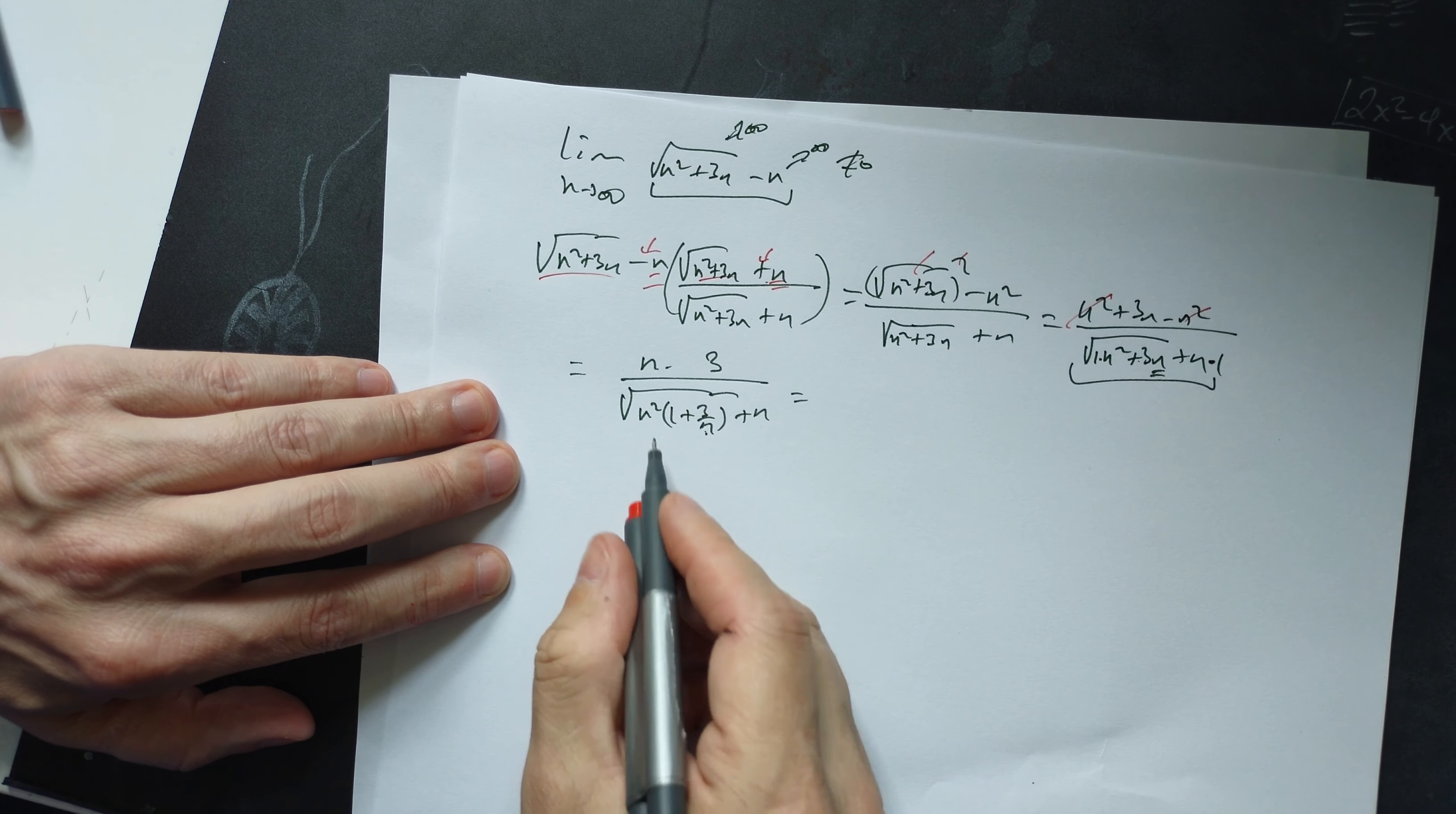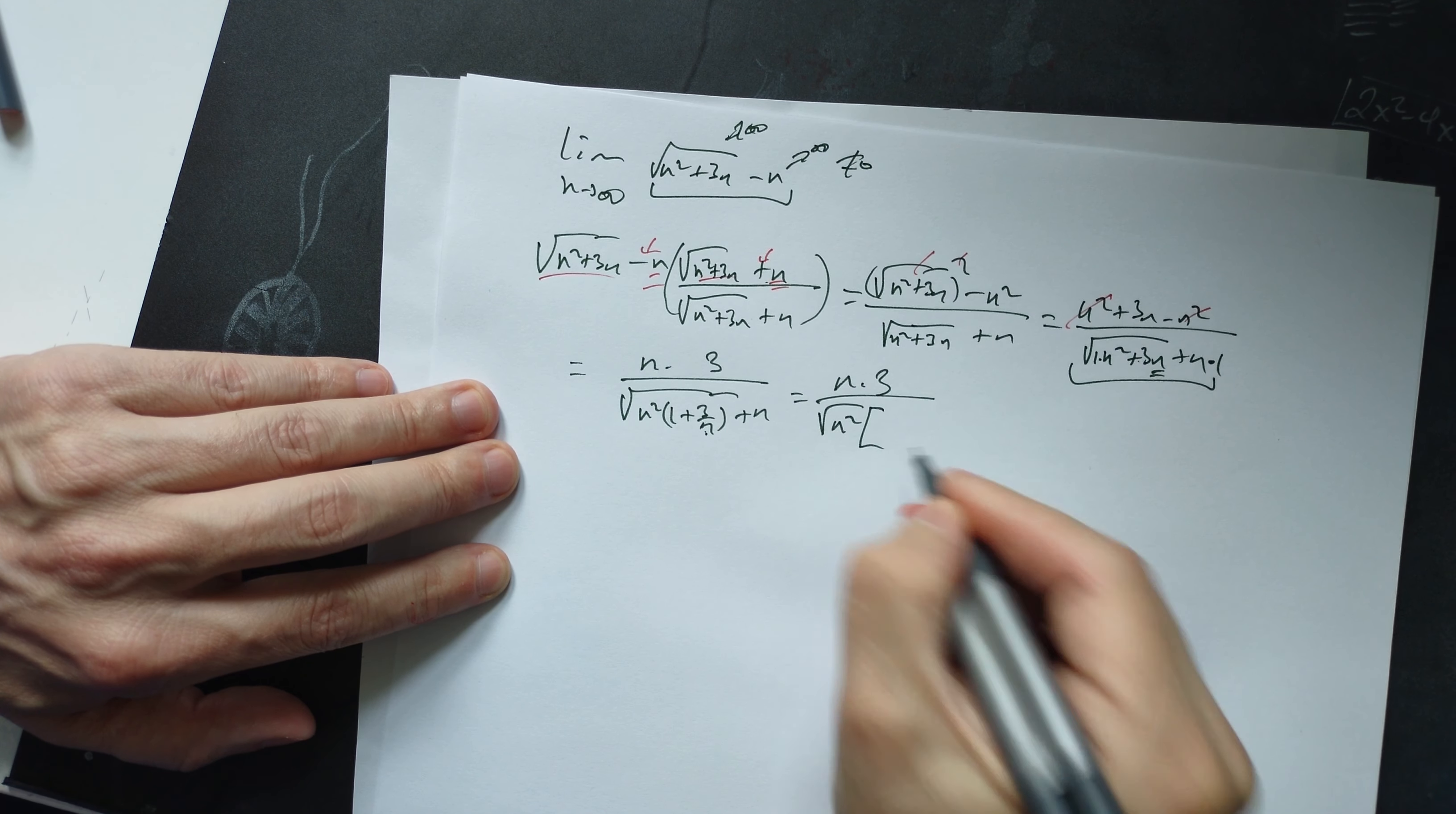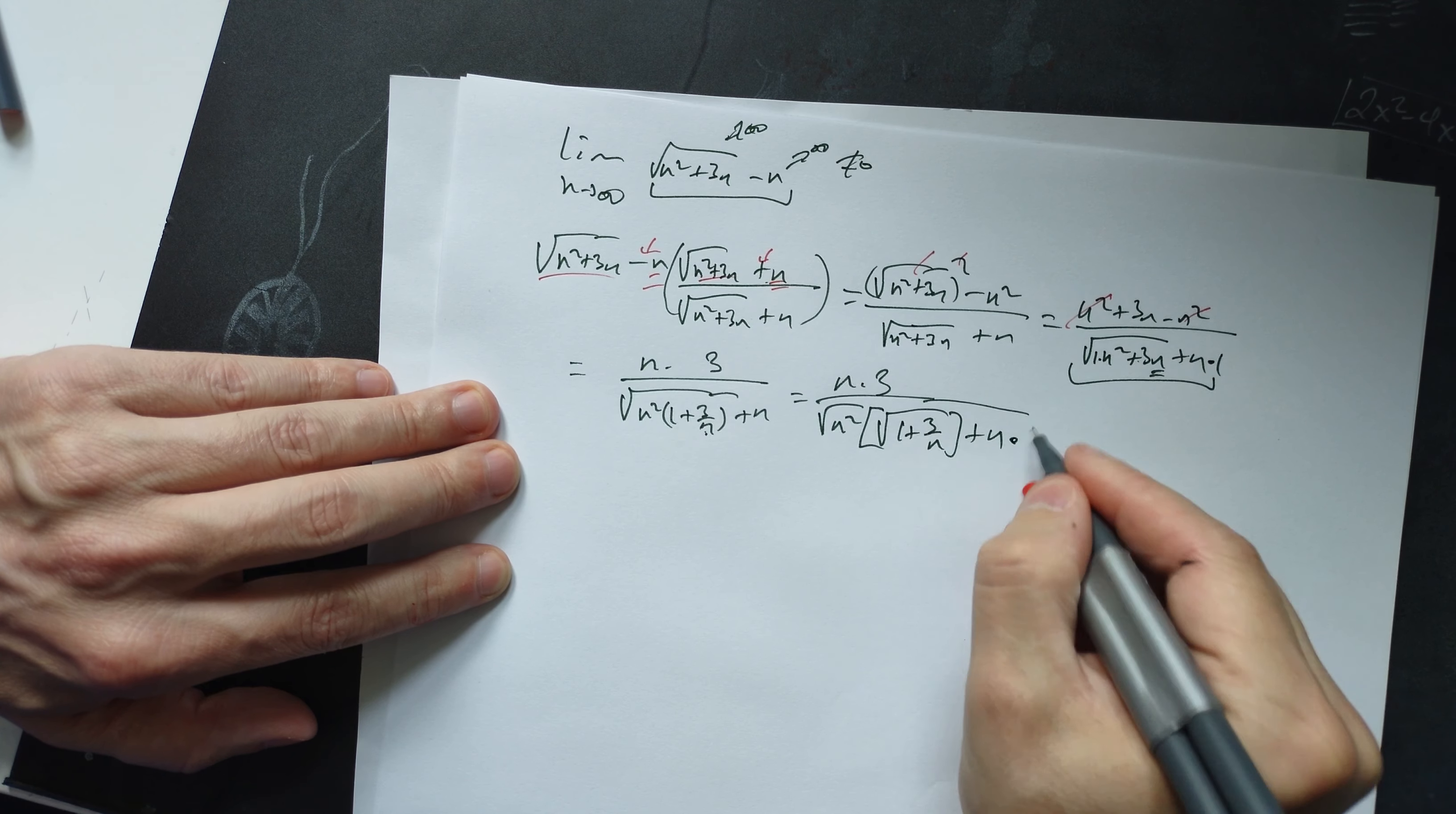Plus the n on the outside. Now distribute the root independently. So it's n·3 over √n²·√(1 + 3/n) plus n·1.